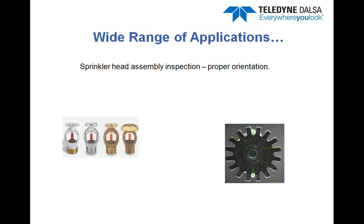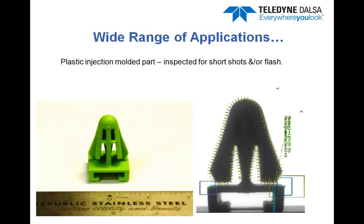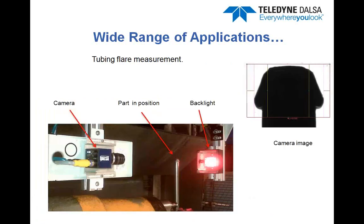We mentioned earlier plastic injection molded parts — this is a typical example. The actual part is on the left, and on the right it shows machine vision tools used to detect both flashing and short shots on those parts. Another example focused on measurements: on the left we see the actual installation with a camera, the part in position, and in this case we're using a backlight. On the right is the actual camera image, where we're using software caliper tools to measure the dimensions of the flared assembly.